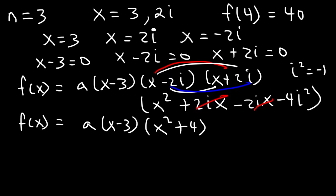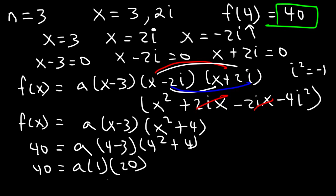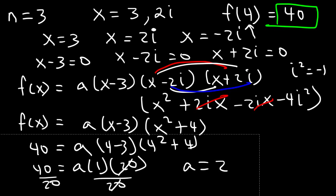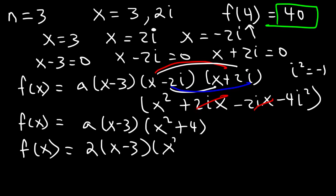Now let's replace f of x with 40 and x with 4. So this is going to be 4 minus 3, and then 4 squared plus 4. 4 minus 3 is 1, 4 squared is 16 plus 4, that's 20. If we divide both sides by 20, 40 divided by 20 is 2. So a is equal to 2. Therefore, f of x is equal to 2 times x minus 3 times x squared plus 4.